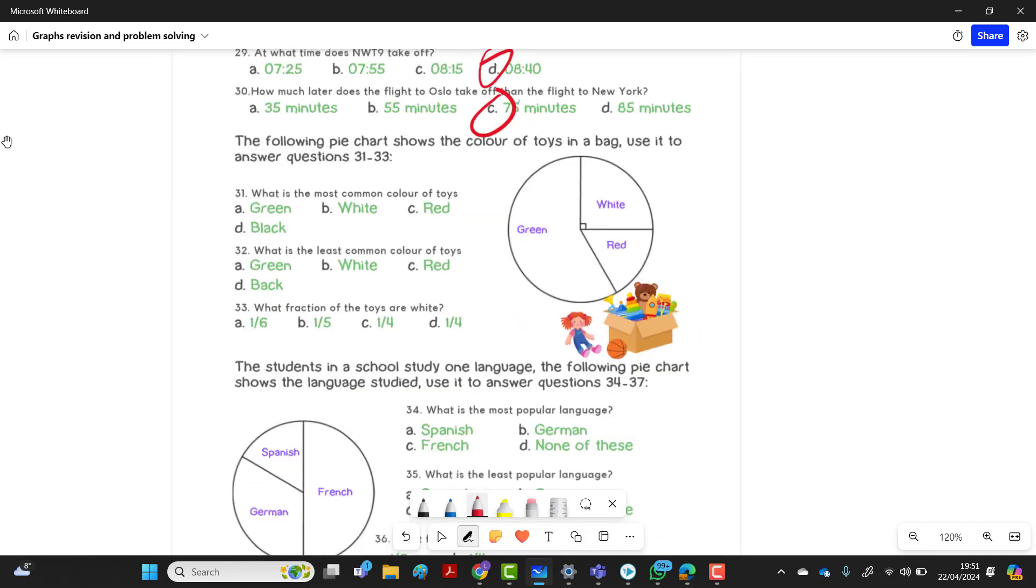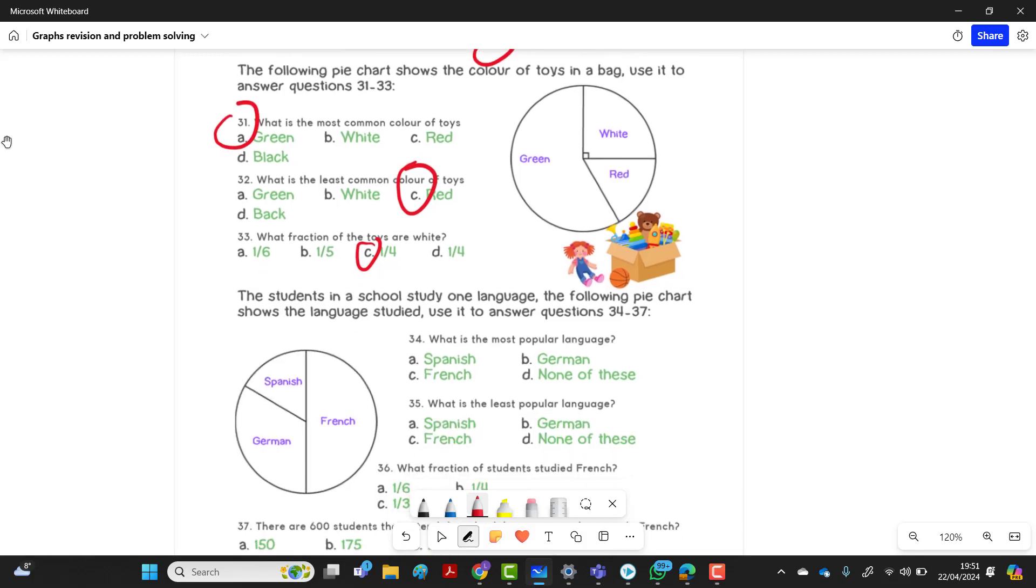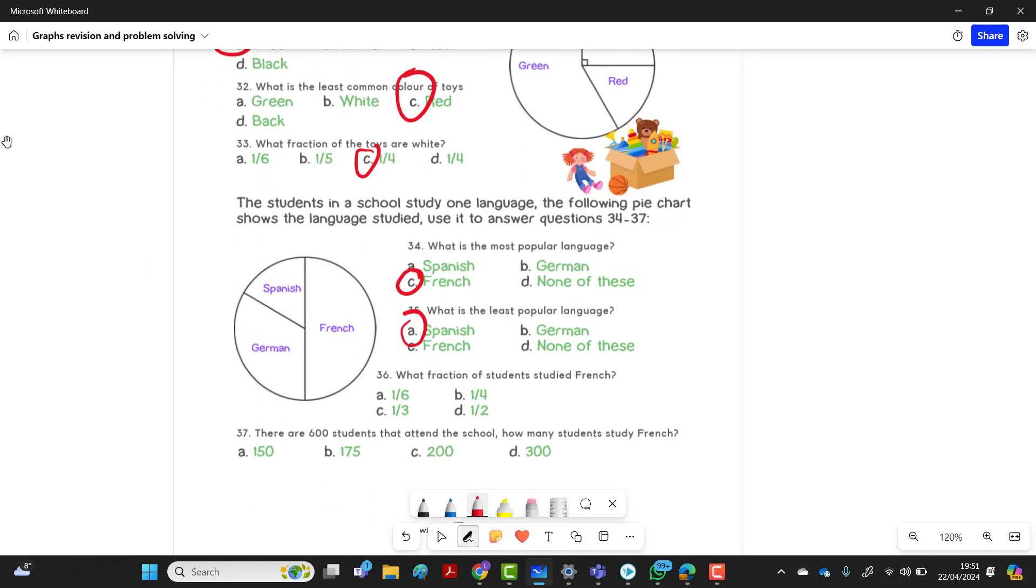The most common color of toys. It's the biggest slice. So 31 is A. What's the least common color? So it's the smallest slice. So that's red. So 32 is C. What fraction is white? Well, it's a quarter. So 33 is C. What's the least popular language? It's French. So 35 is A. What fraction of students studied French? So it's half. 36 is A. 37 is 600 students attend a school. How many studied French? So it would be half of 600, which is D, 300. 37 D.